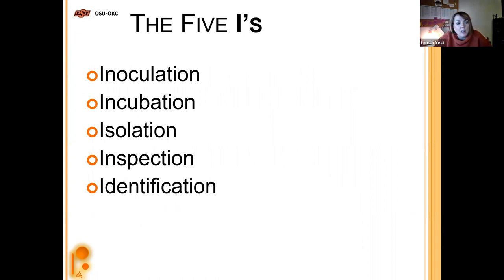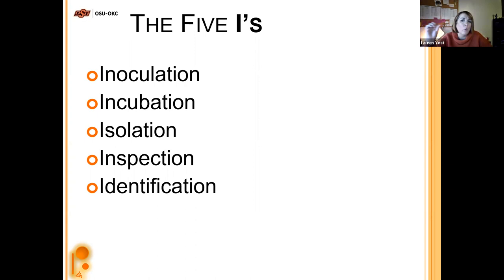The five I's are: inoculation, incubation, isolation, inspection, and identification. It's important to distinguish between them so you know what is going on in each step and what should be happening in the whole stepwise manner of investigating and trying to figure out what an organism is. We'll start with inoculation.